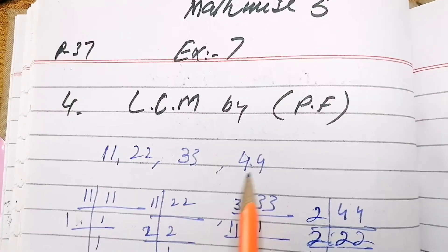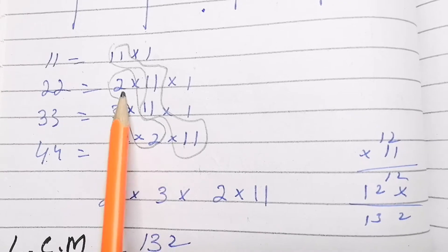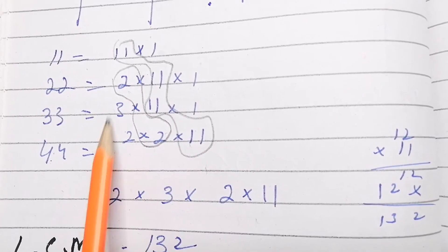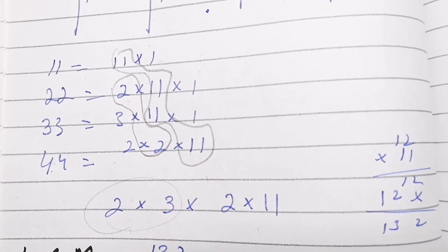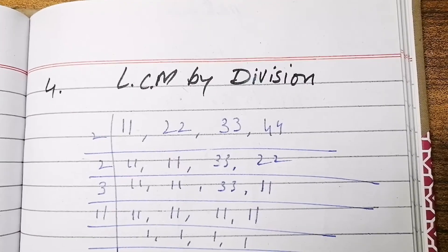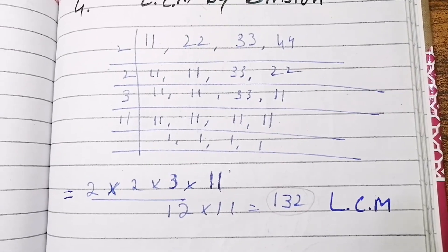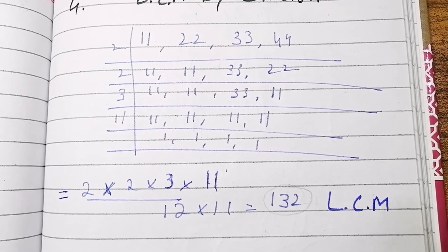For part 4, common factors include 11 and 2, and non-common factors like 3 and 2 are also taken. The answer is 132. Solving the same question by division method gives the same answer, 132.